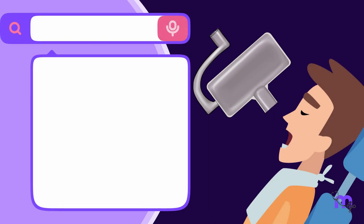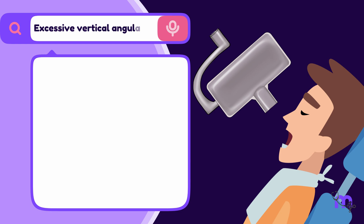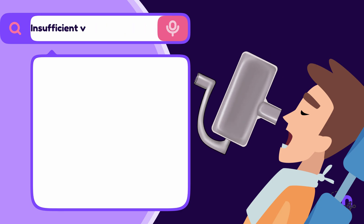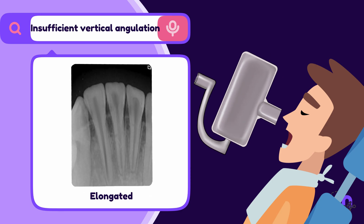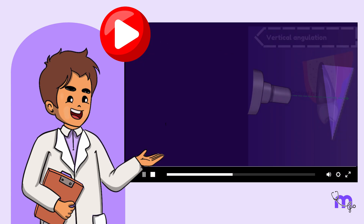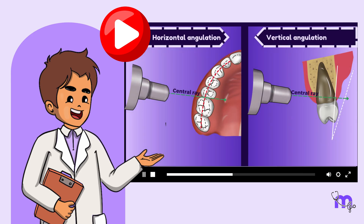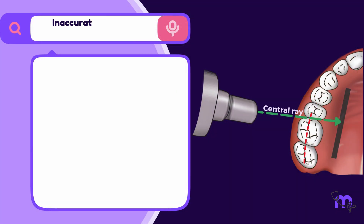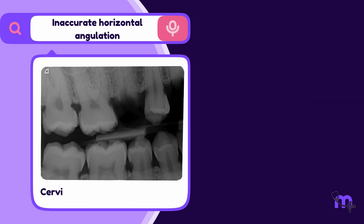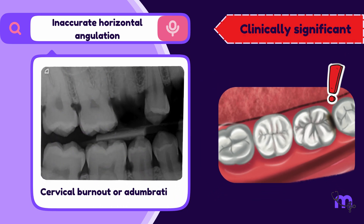An excessive vertical angulation of the position indicating device produces a foreshortened image, while insufficient angulation produces an elongated image. As covered in the bisecting angle technique, accurate vertical and horizontal angulation is essential for optimal radiographs. Inaccurate horizontal angulation can lead to overlapped contacts and a cervical burnout, or adumbration. Cervical burnout is clinically significant as it can be misdiagnosed as dental caries.